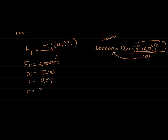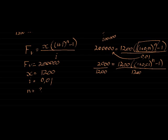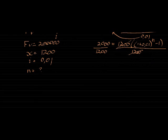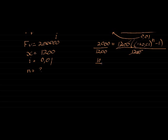So first we multiply the 0.01 on that side, which leaves me with two less zeros. So 2,000 is equal to 1,200 times (1 plus 0.01 to the power of n minus 1). Then we divide both sides with 1,200, which gives me 20 over 12. What's that? 10 over 6? No, 20 over 12 is 10 over 6.